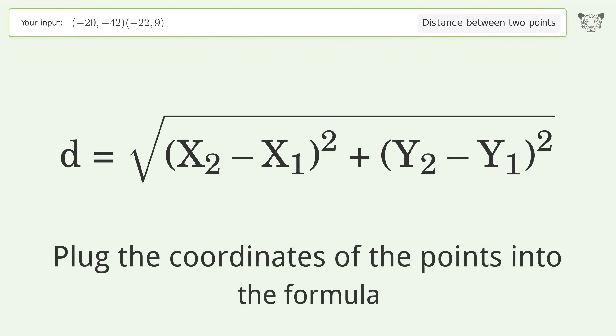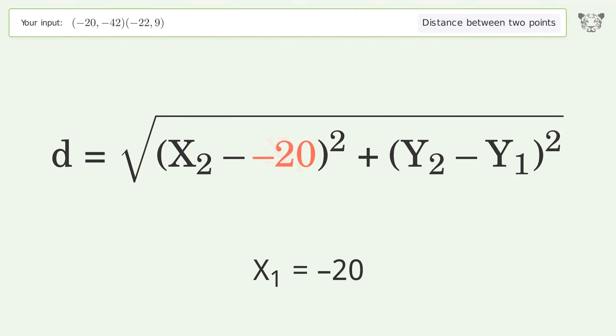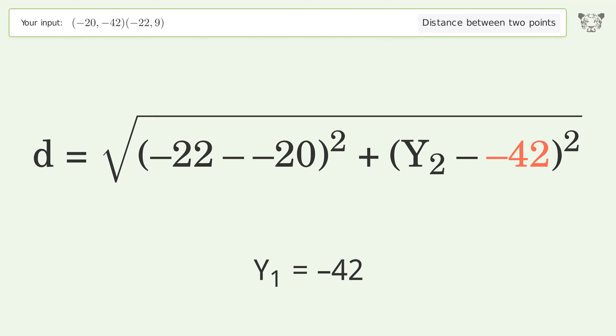Plug the coordinates of the points into the formula. x1 equals negative 20, x2 equals negative 22, y1 equals negative 42, y2 equals 9.